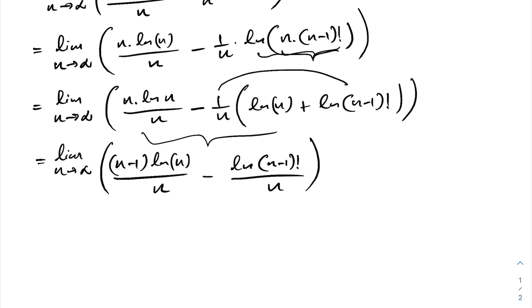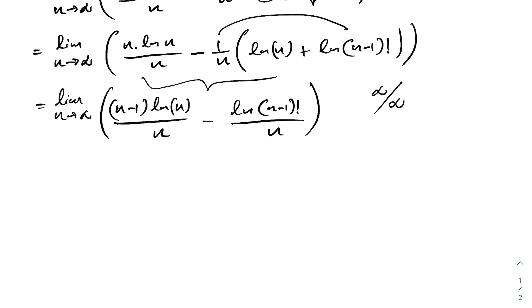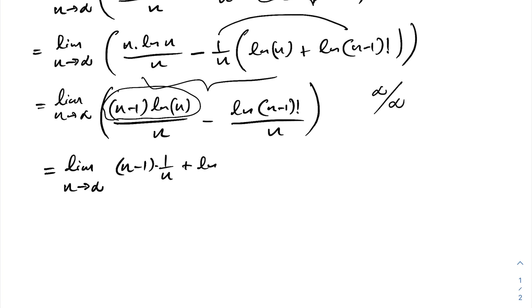Now if we apply the limit as n approaches infinity, we get infinity over infinity, which is undefined. Therefore, I am going to apply L'Hôpital's rule, differentiating both numerator and denominator with respect to n. For the numerator, using the product rule: derivative of n minus 1 times natural log of n gives n minus 1 times 1 over n, plus natural log of n times 1. The derivative of the denominator is 1. Then for the natural log of n minus 1 factorial part, I will write natural log of n minus 1 factorial.